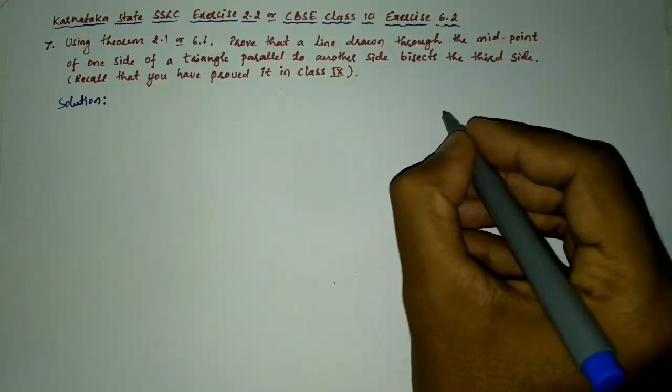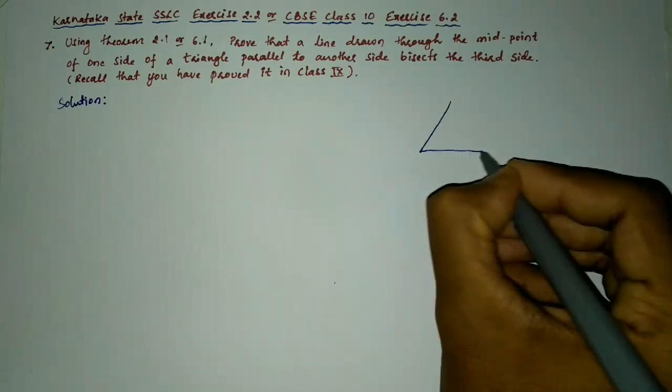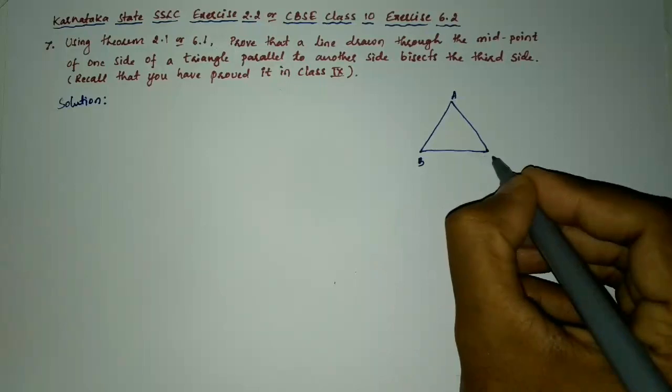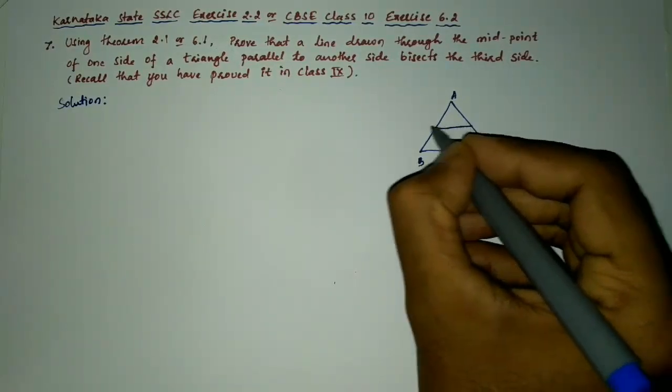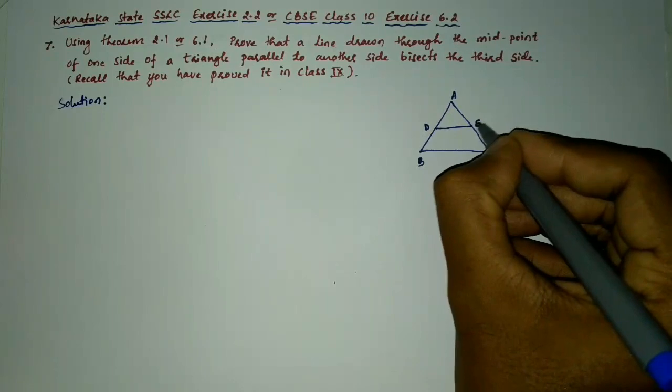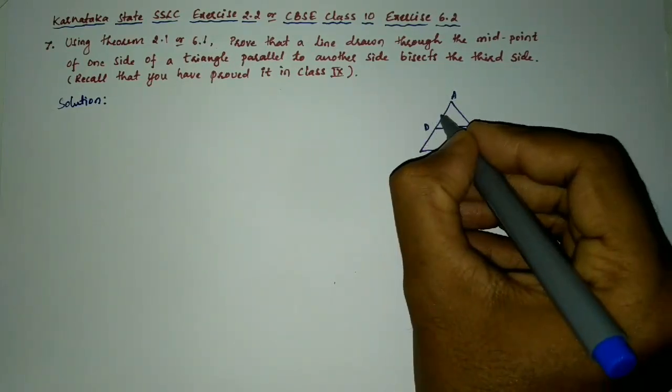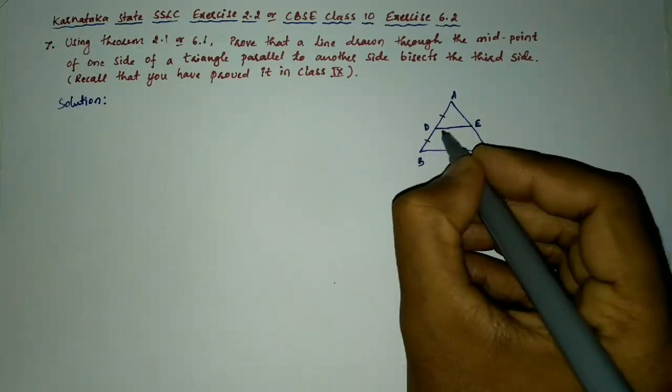Here we will draw the triangle ABC and here the line DE bisects AB and AC. Here AD is equal to DB.